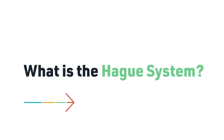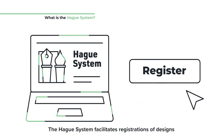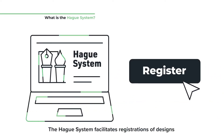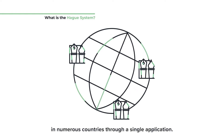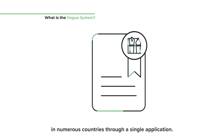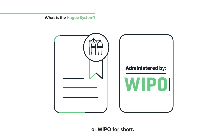What is the Hague System? The Hague System facilitates registrations of designs in numerous countries through a single application. It is administered by the World Intellectual Property Organization, or WIPO for short.